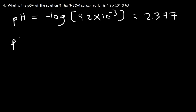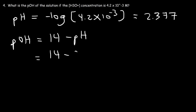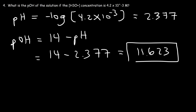Now we can calculate the pOH using the formula: pOH equals 14 minus the pH. So that's 14 minus 2.377, which works out to be 11.623. That's the pOH of the solution.